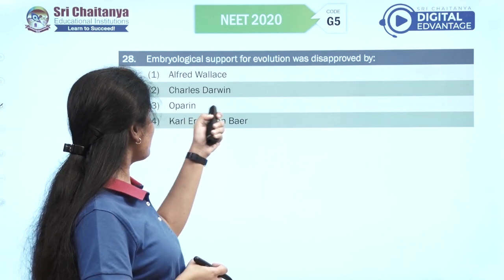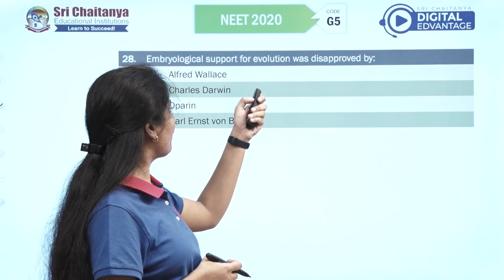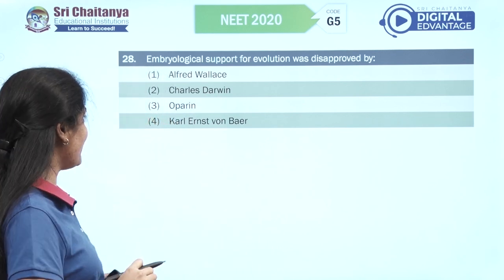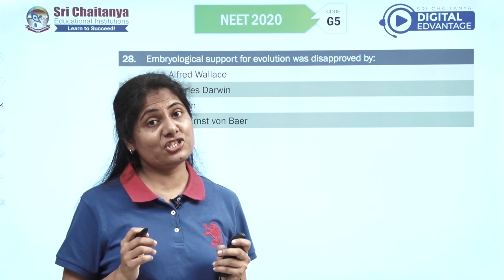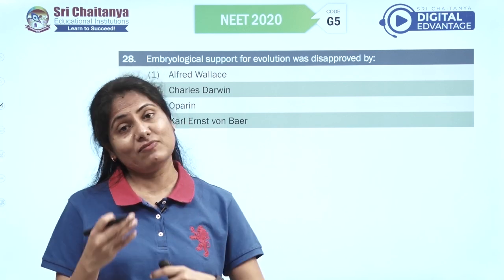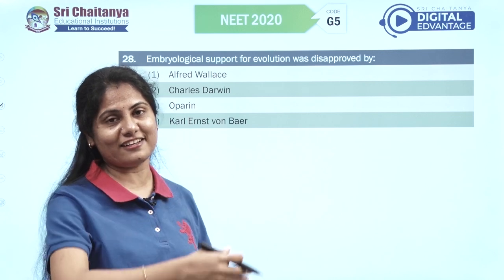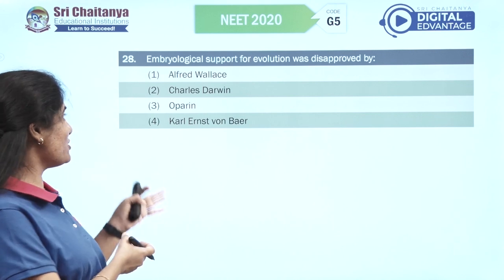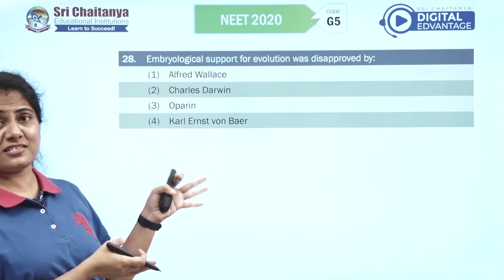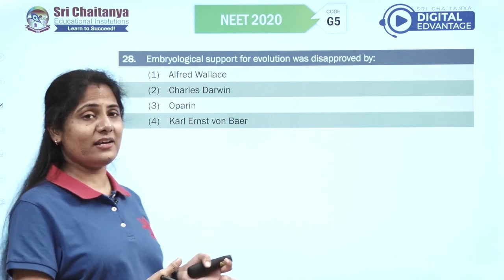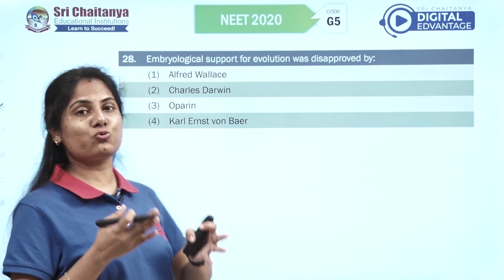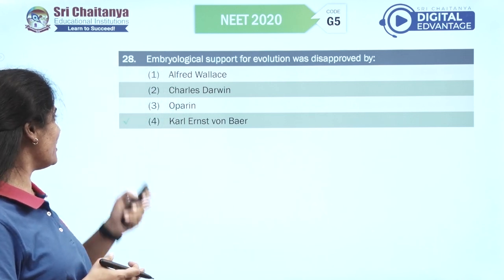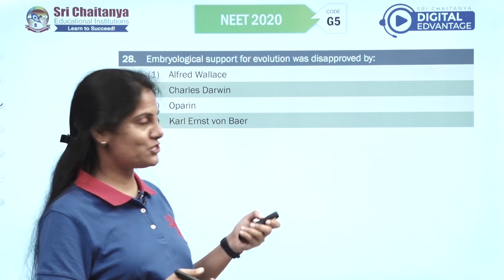Embryological support for evolution was disapproved by — this question would have been trickier if Ernest Haeckel were in the options. Luckily the options are Alfred Wallace, Charles Darwin, Oparin, and Karl Ernst von Baer. The fourth option is your right option.